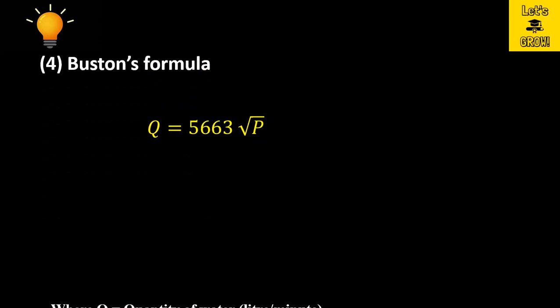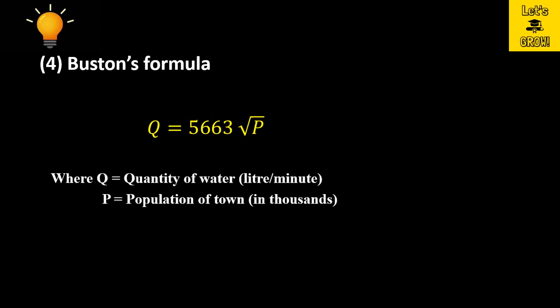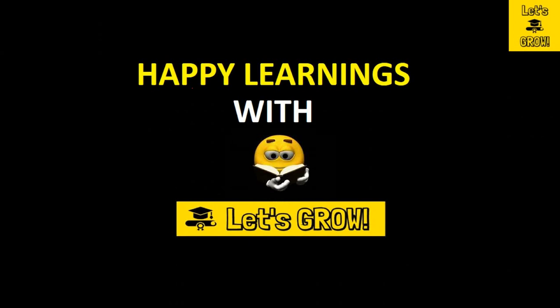The last formula is given by Buston, that is why it is called Buston's formula. Here you can see this formula where Q is the quantity of water in liter per minute and P is the population of town in thousands. These are the four generally used formulas for the computation of water in case of fire.